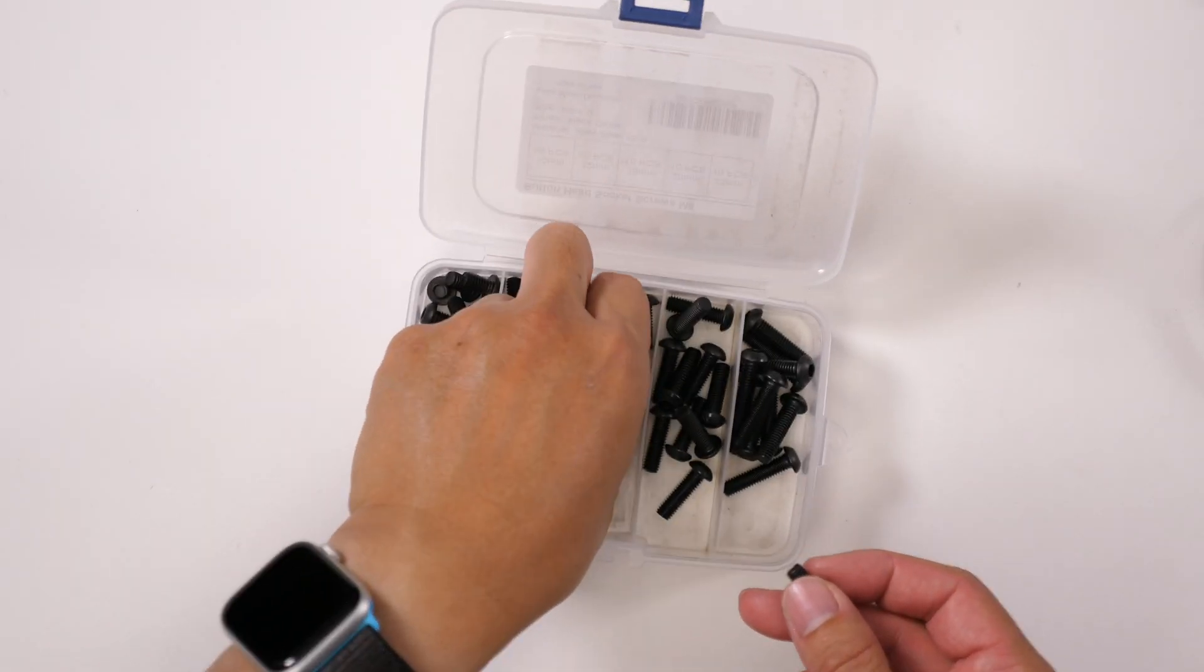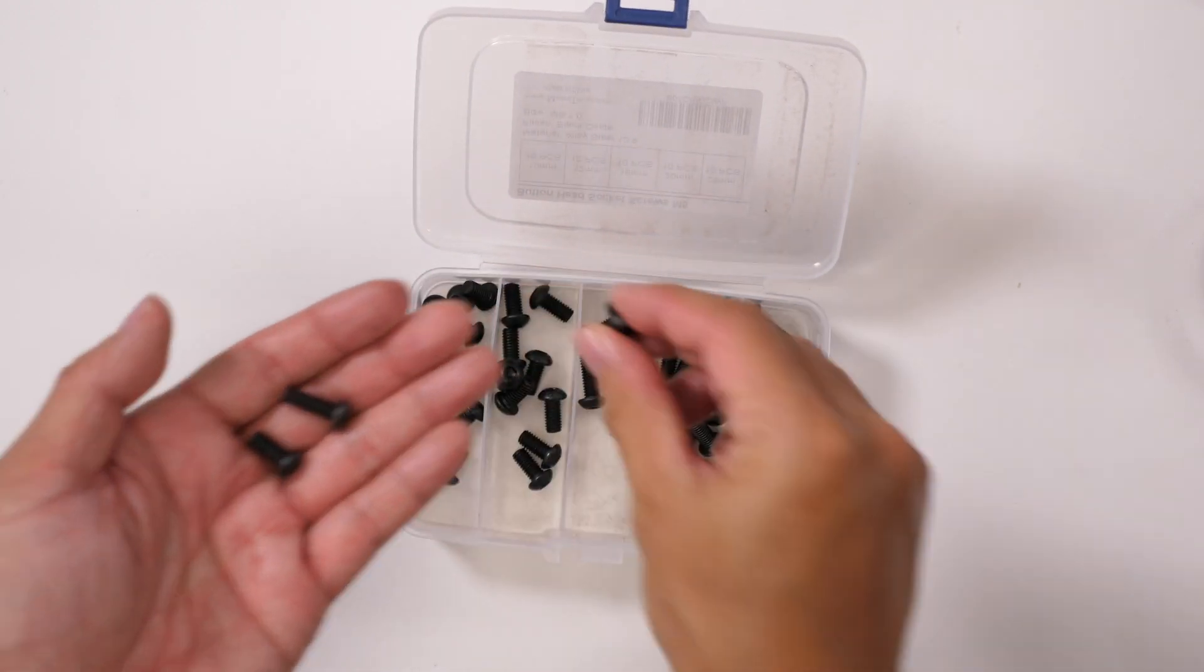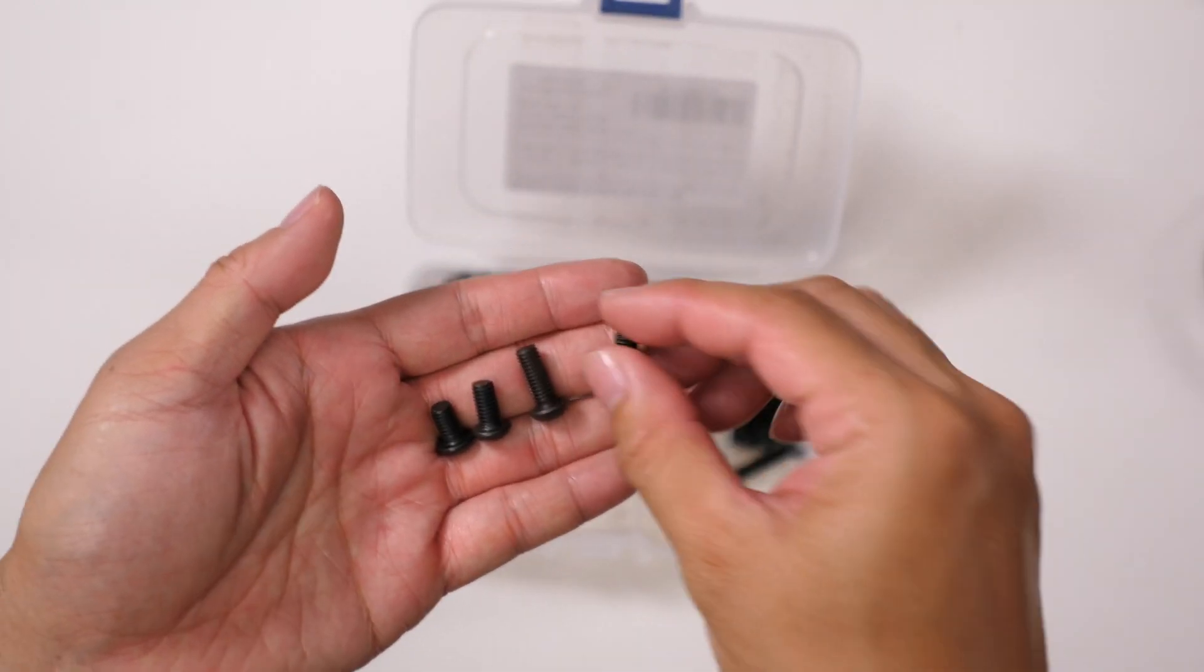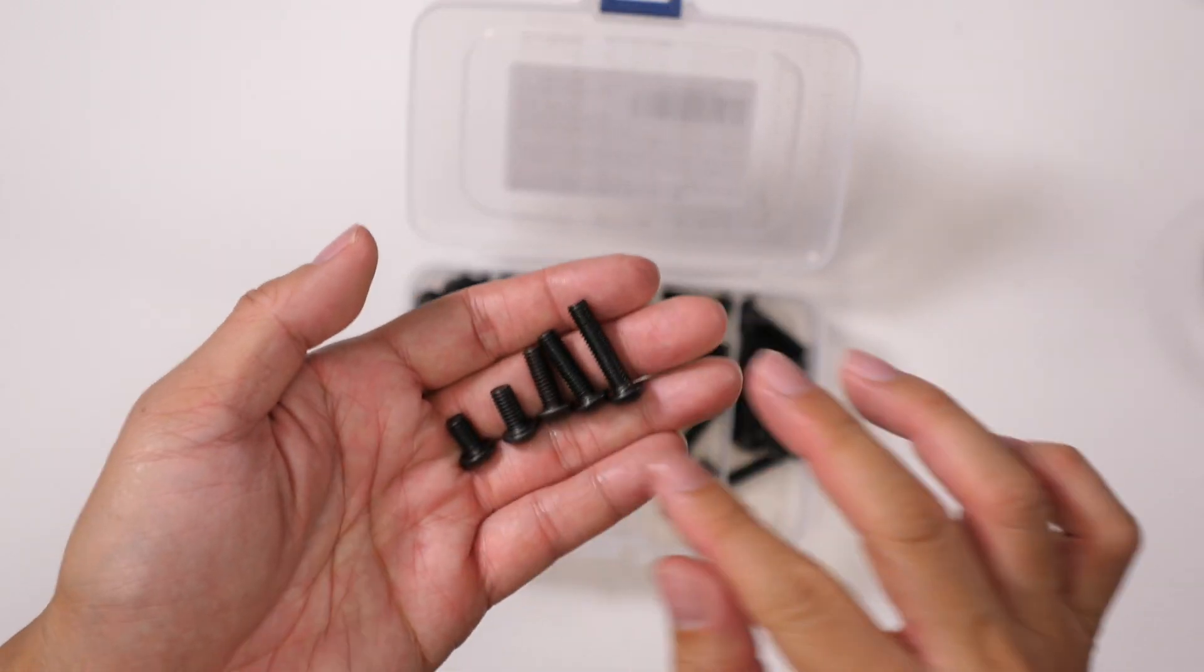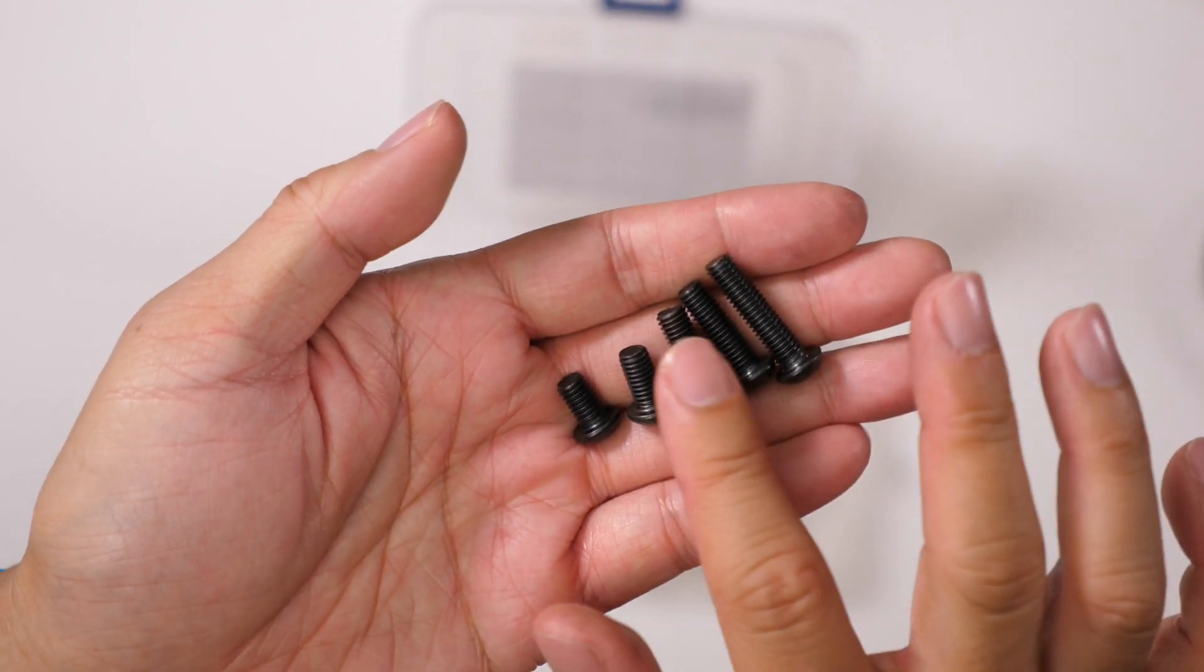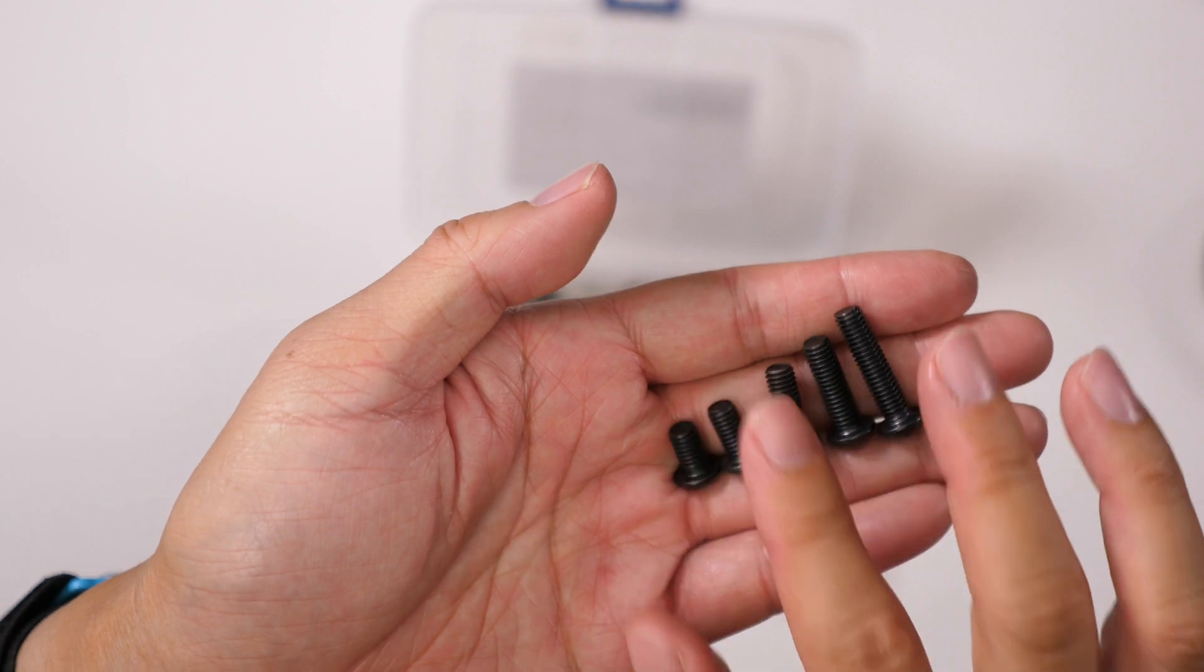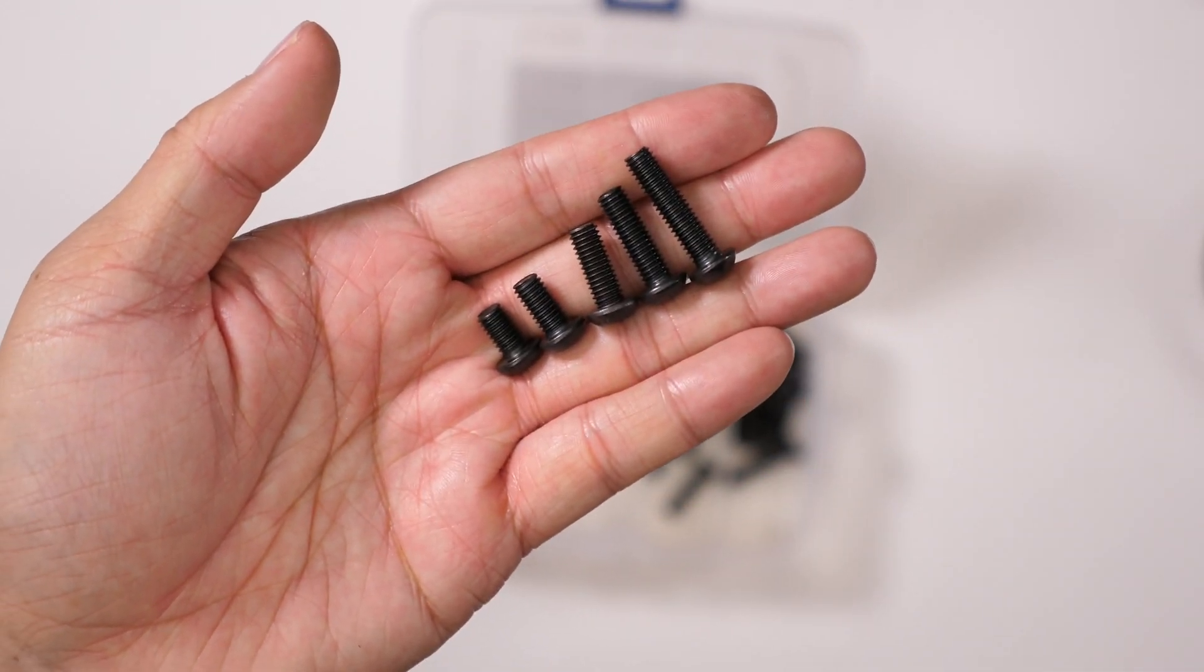And then there are different lengths, so let's go ahead and compare what those look like. And again, these are metric, so it's an M6 size bolt. Get an idea of how long they are.